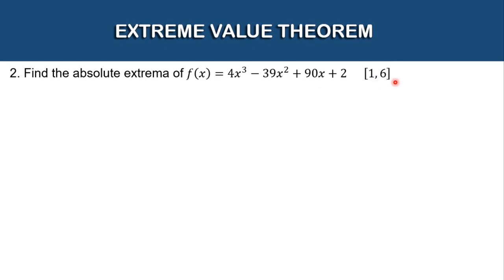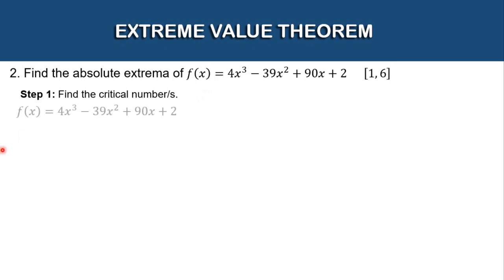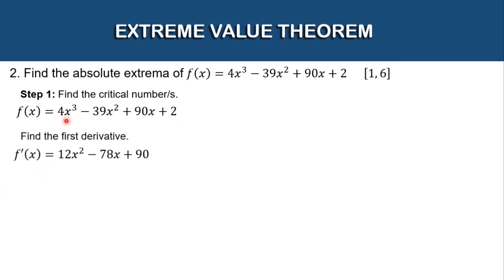Let's repeat the same steps from example 1. Step 1 is to find the critical numbers. Our given function is 4x³ − 39x² + 90x + 2. Finding the first derivative: for the first term, 3 × 4 = 12 and the exponent becomes 2. For the second term, 39 × 2 = 78 and the exponent becomes 1. The derivative of 90x is 90, and the derivative of 2 is 0.